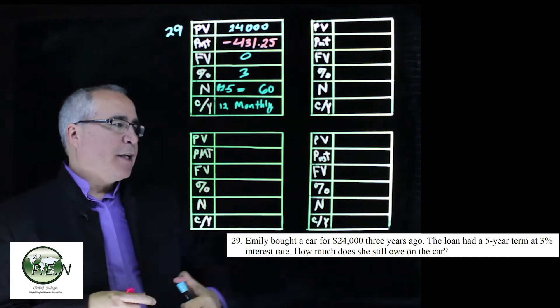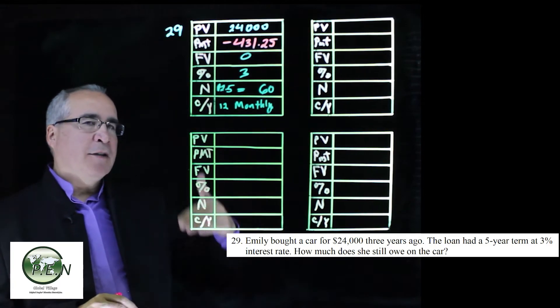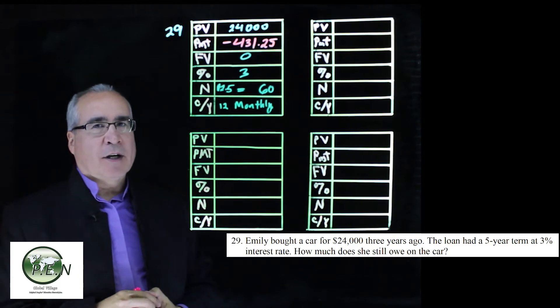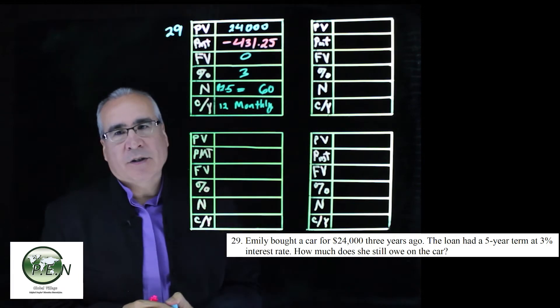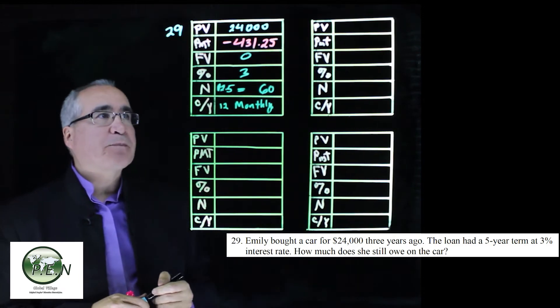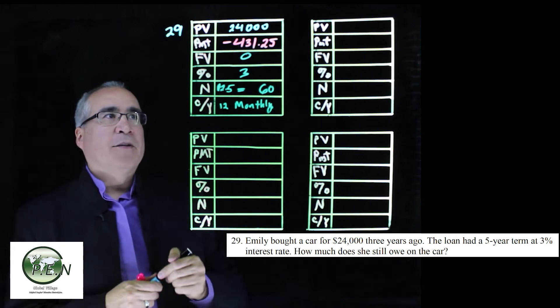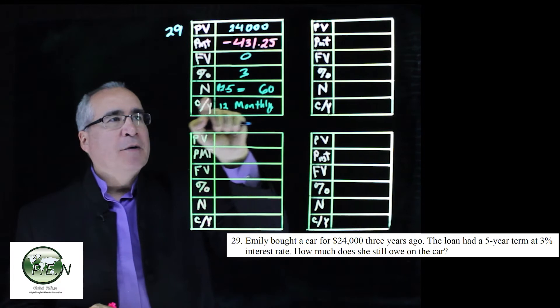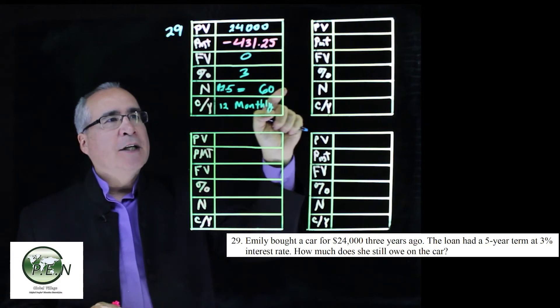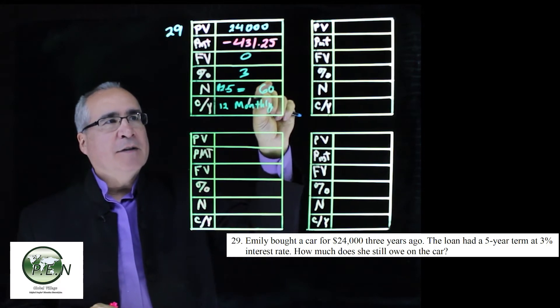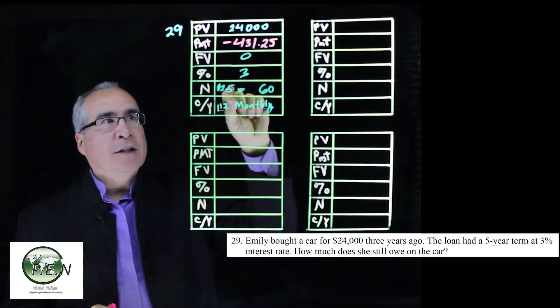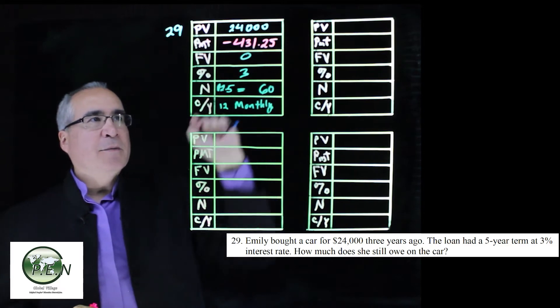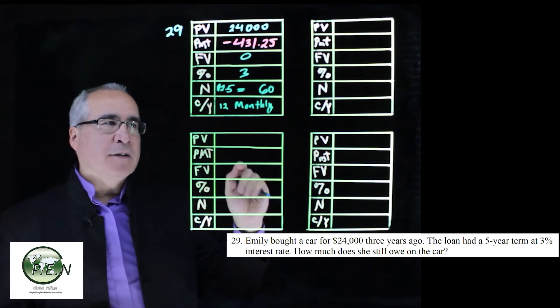And now we come back to the story that Emily is actually three years into this car payment, and she wants to know how much does she owe on the car. So what we're going to do is, now that we know what the payment is, we know all the details, we're going to change the number of months, not make it 60, but we're only going to go three years into this, which will be 36, and then we'll calculate what the future value is at that point.